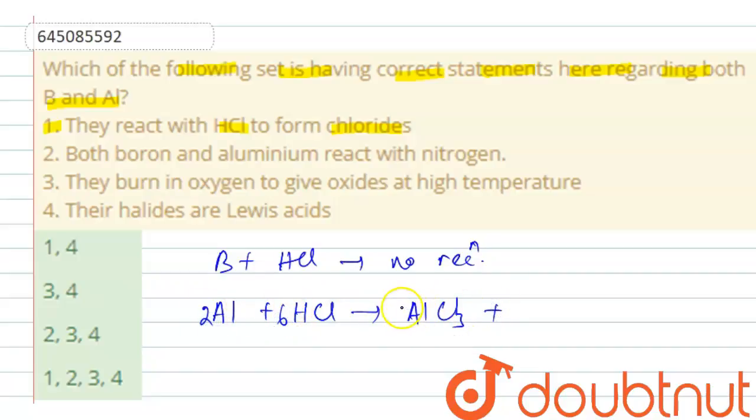So 2Al + 6HCl → 2AlCl3 + 3H2. Therefore, the first option itself is wrong.